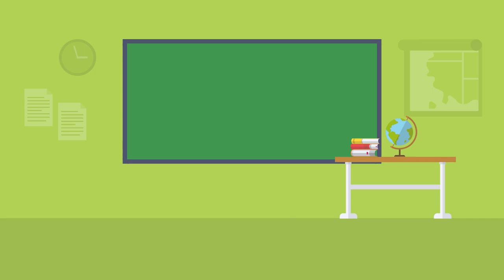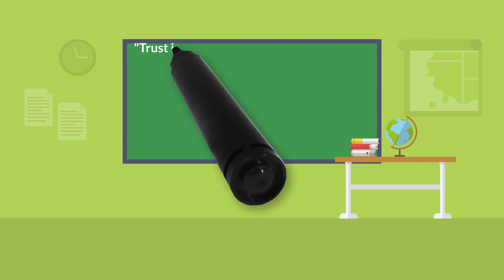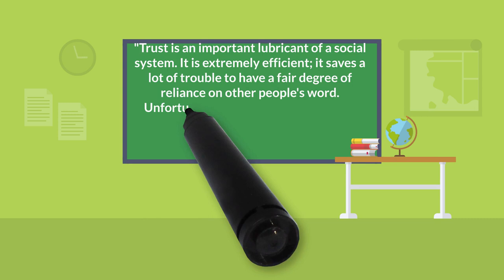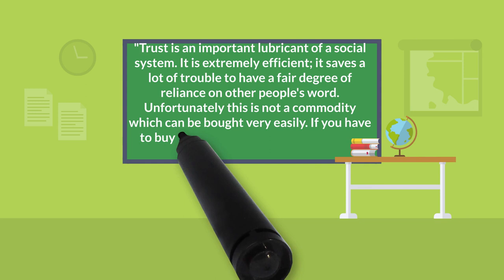Quote. Vast ills have followed a belief in certainty. End of quote. Quote. Trust is an important lubricant of a social system. It is extremely efficient. It saves a lot of trouble to have a fair degree of reliance on other people's word. Unfortunately, this is not a commodity which can be bought very easily. If you have to buy it, you already have some doubts about what you have bought. End of quote.